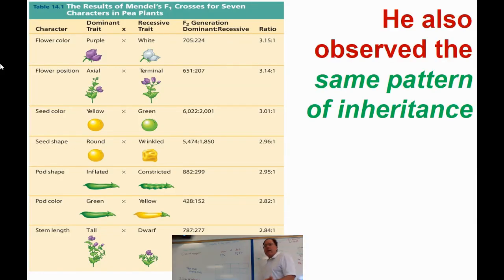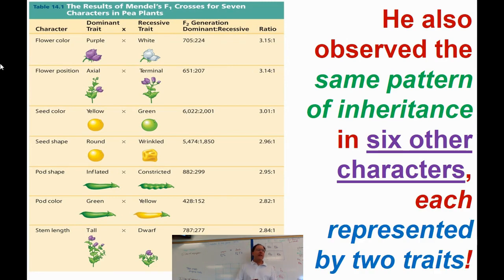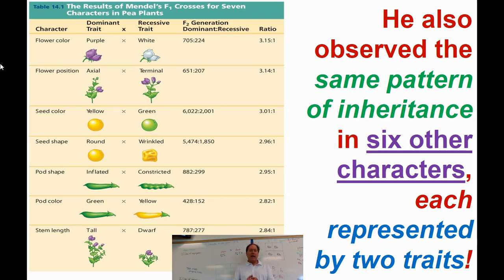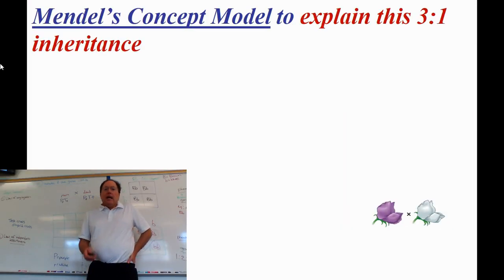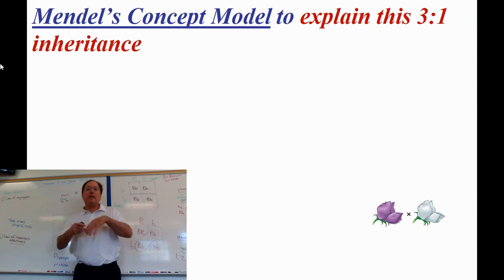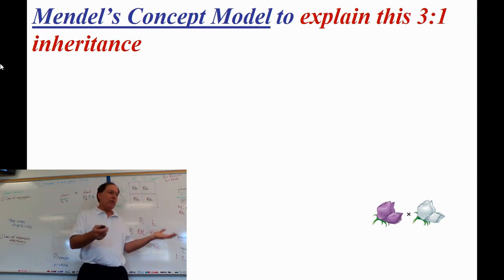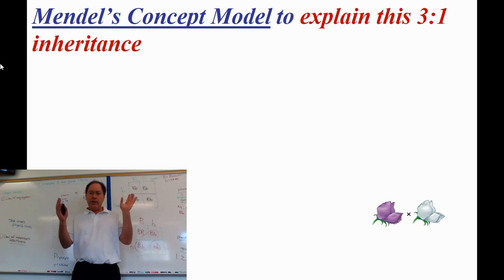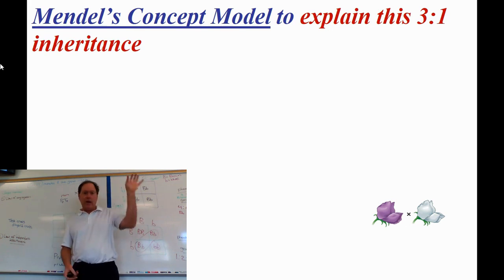I remember learning about this in college. What I found fascinating was some people argued that Mendel fudged his data — they said there's no way he could have gotten such a nice 3:1 ratio on all of these experiments. I was a believer when it came to Mendel, but some people don't think he did it right. He observed a 3:1 ratio in the F2 generation when hybrids are crossed following true-breeding pea generations for any characteristic.